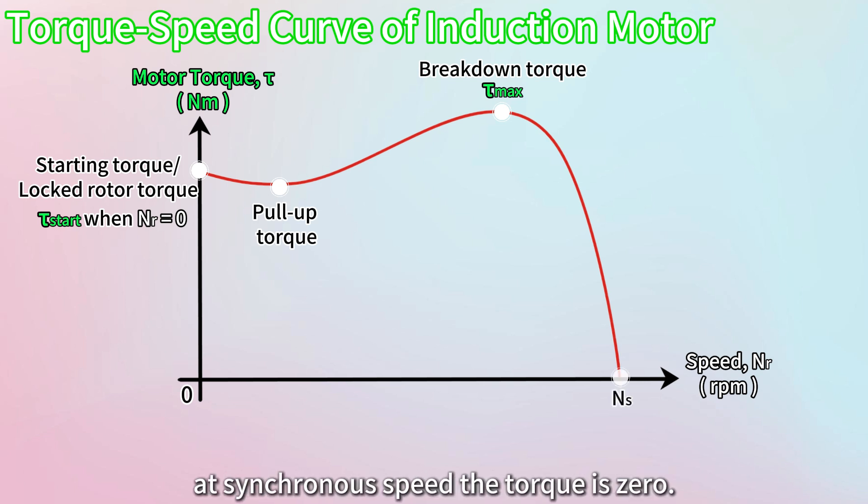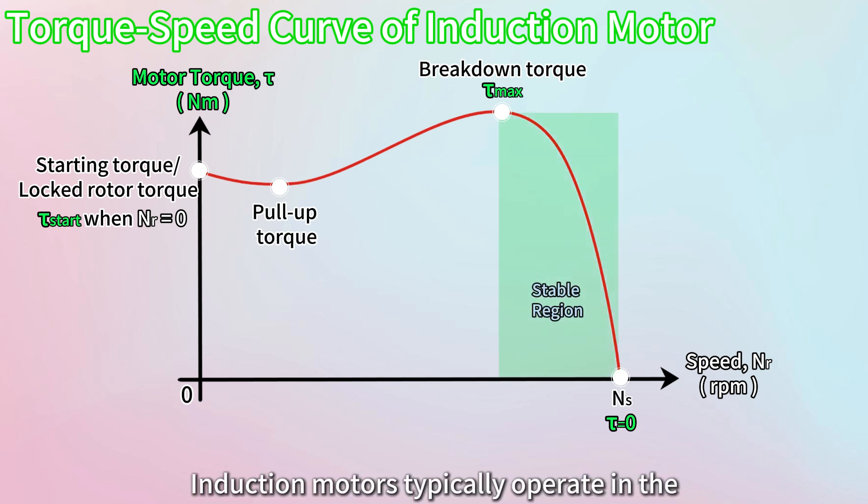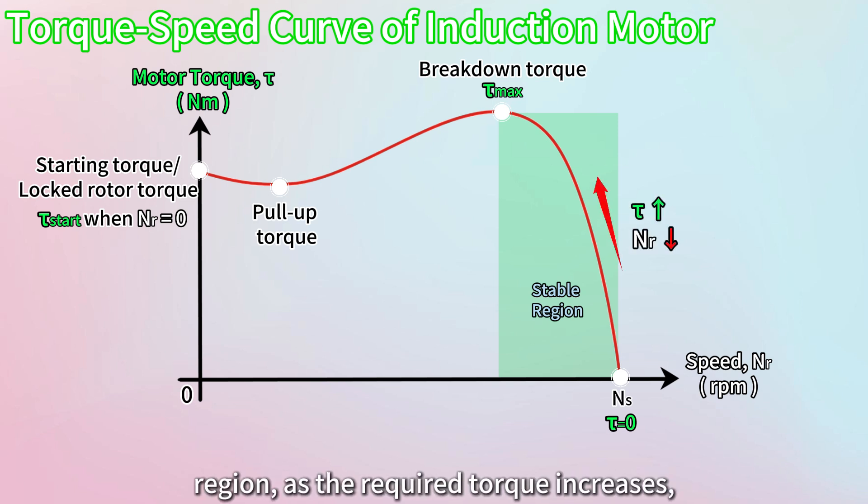Lastly, as you might have guessed at synchronous speed, the torque is zero. Induction motors typically operate in the stable region of the torque speed curve, which is located to the right. In this region, as the required torque increases, the motor speed will gradually decrease, maintaining stable and efficient operation under varying loads.